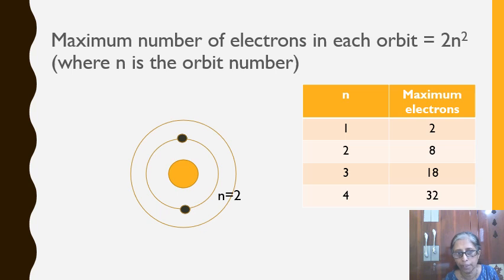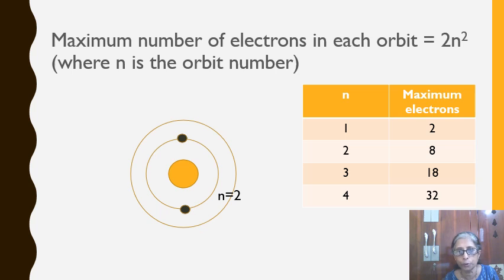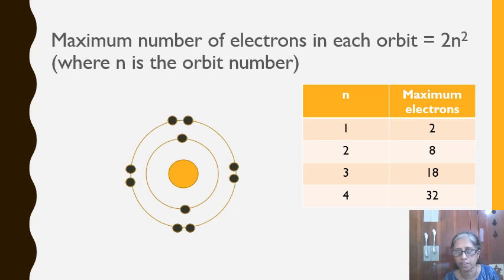For the second shell, N=2. Using the formula 2N², N² gives 2²=4, and 2×4=8. So 8 electrons can be accommodated in the second shell.